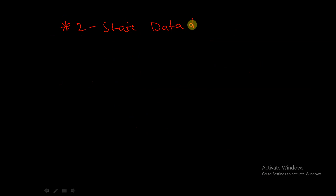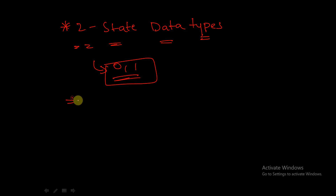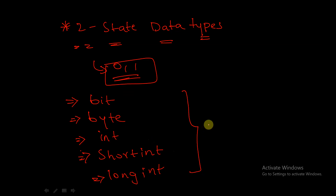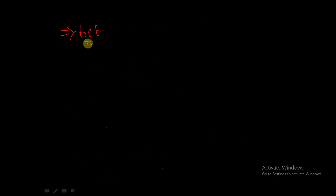Now let's discuss two-state data types. These can only store two values: zero and one. Some examples of two-state data types in SystemVerilog are: bit, byte, int, short int, and long int. All of these can only have values of zero or one.